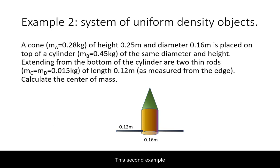This second example will demonstrate center of mass calculation for a system of extended objects. In this example, the system consists of a cone placed on top of a cylinder with two thin rods extending from the bottom.